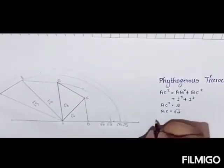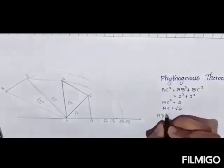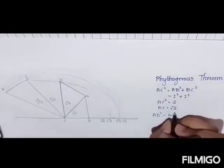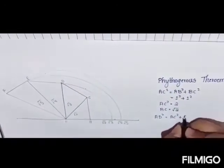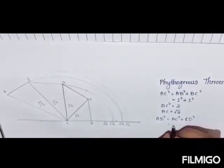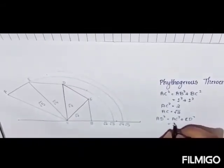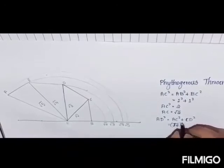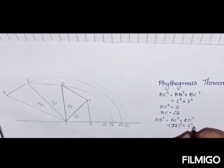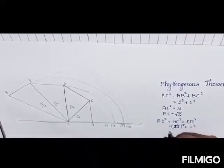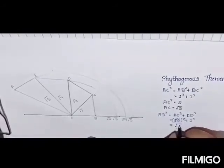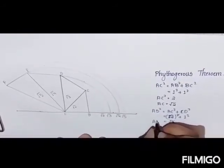As the same, AD² equals AC² plus CD², which equals root 2 whole squared plus 1². Root and square get cancelled. It will be root 3. AD equals root 3.